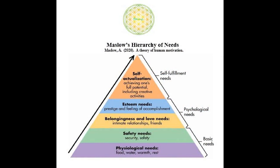Abraham Maslow wrote a book in 1943 called A Theory of Human Motivation. In that book, he established that there exist five elements of human needs that need to be fulfilled for humans to reach a level of thriving and motivation. This theory is relevant to us today because we need to understand how the monetary system that we live in actually hinders the ability for some humans to thrive.